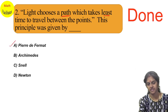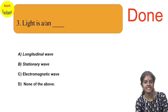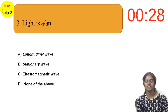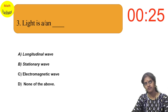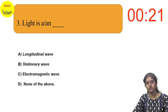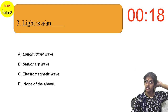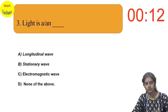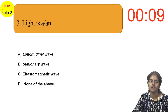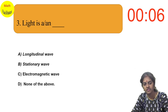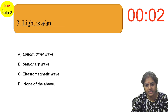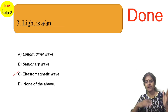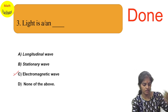Next question: light is a blank type of wave. Is it a longitudinal wave, a stationary wave, an electromagnetic wave, or none of the above? Light has an electric wave and a magnetic wave perpendicular to each other, and the direction of propagation is perpendicular to both — so it is an electromagnetic wave.